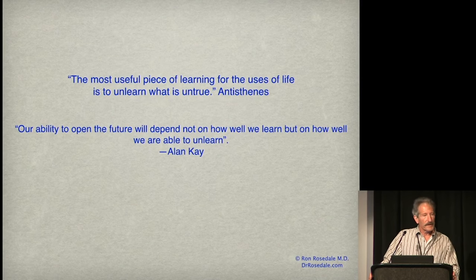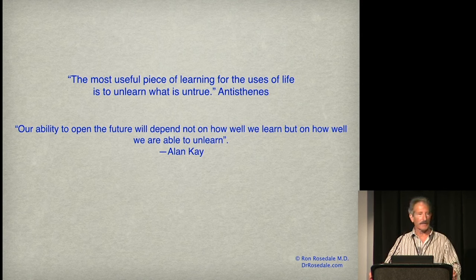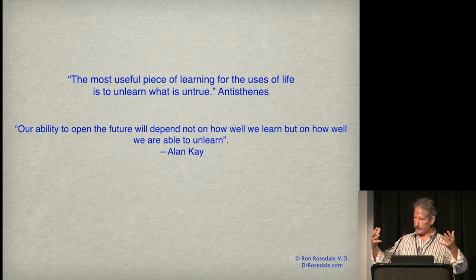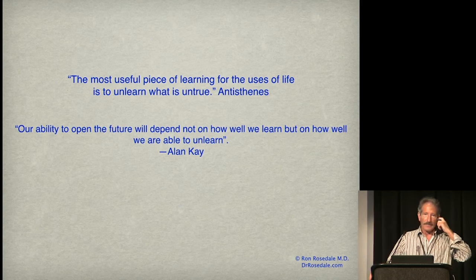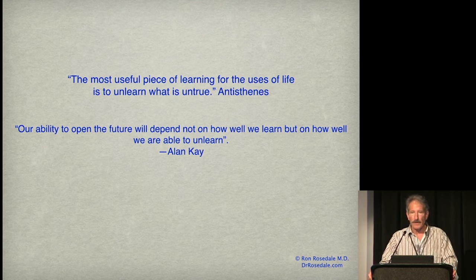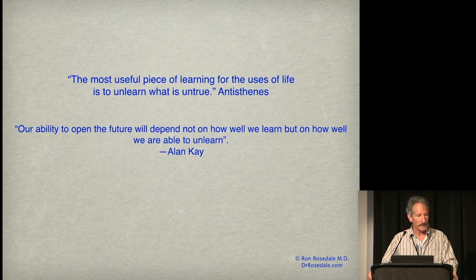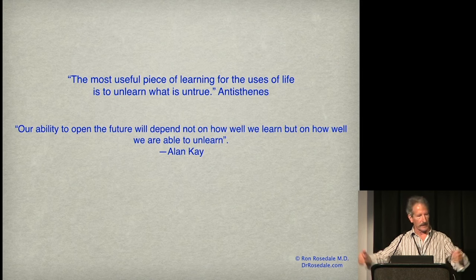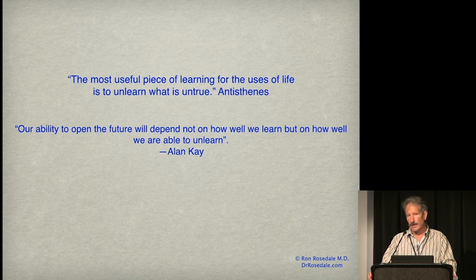Right now there are two schools of cancer duking it out. There's the traditional view: cancer is a genetic disease where you get a bunch of mutations that turn a normal cell into a cancer cell that starts proliferating everywhere. The other is the so-called metabolic theory of Otto Warburg, now being picked up by people like Tom Seyfried, who say cancer is a metabolic disease due to an addiction to glucose because of mitochondrial damage — it can't use its mitochondria and is stuck using glycolysis. I'm going to show that they're both wrong — and not only wrong, but they both cannot be right.